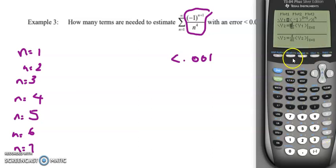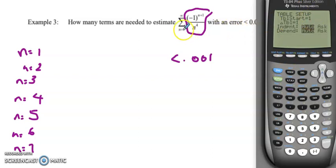So what I'm going to do here is I'm going to go to my table set. Do you see this little blue says table set? So I go second table set, and I want to start my table at 1, because that is my lower index here. And my delta table is going to be 1, because with the sequence and the series, we go up by integers. So that helps me, and I can look at the table, and I say, okay.